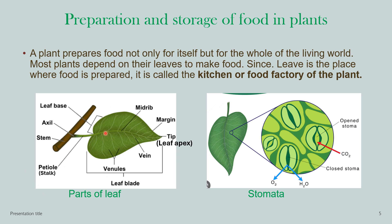The tip of the leaf is known as the leaf apex. The leaf is attached to the stem by means of a stalk, also known as a petiole. The point where it is attached to the stem is known as the axle, and that part is also called the leaf base. Practice drawing this diagram and labelling the parts at home to remember all the names.